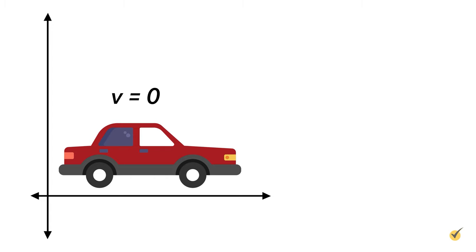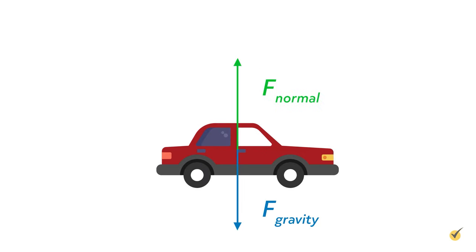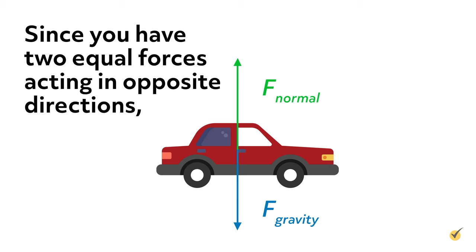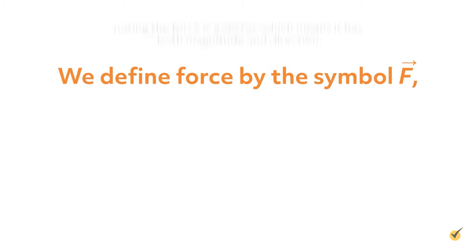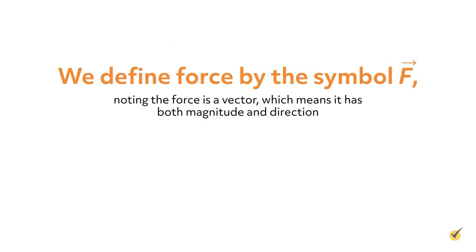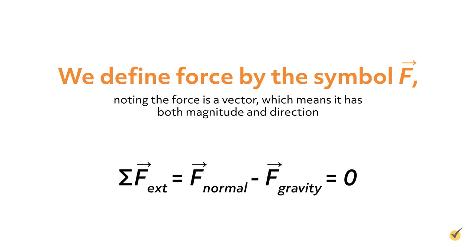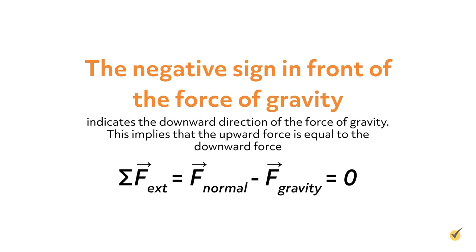Let's look at an object in an inertial reference frame with a velocity of zero. It would seem there are no net external forces acting on the car since it isn't moving. But what about gravity? While gravity is pulling the car downward toward Earth, the car is on the ground, and the ground provides a force in opposition to gravity — called the normal force. Since you have two equal forces acting in opposite directions, the forces cancel out and the car does not move vertically. We define force by the symbol F, noting it is a vector with both magnitude and direction. Mathematically, Newton's first law states the sum of external forces equals the upward force of the ground minus the downward force of gravity, which equals zero — implying the upward force equals the downward force.